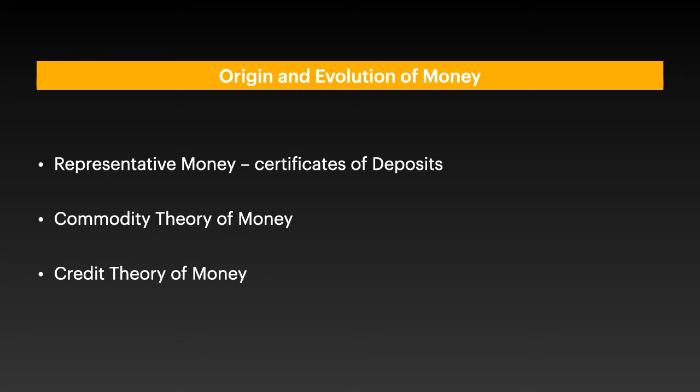For example, the paper currency that we use — the paper of that particular note has no value in itself, but since it represents a 100 rupees or 2000 rupees note, that representation is what brings value to the piece of paper. In the ancient empires of Egypt, Babylon, India and China, temples and palaces often had commodity warehouses which issued certificates of deposits as evidence of claim upon a portion of goods stored.